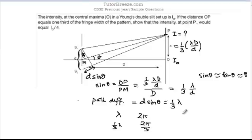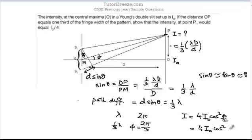Now for the intensity: I = 4I₀ cos²(φ/2), where φ is the phase difference. Here φ = 2π/3, so the intensity comes out to be I₀. However, this assumes the intensity at central maxima is 4I₀. In our question, the intensity at central maxima is given as I₀, which means the intensity at point P is I₀/4.